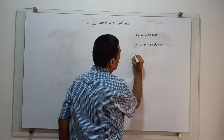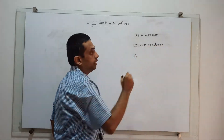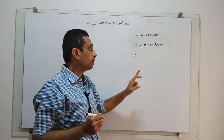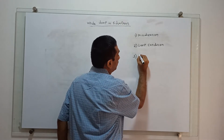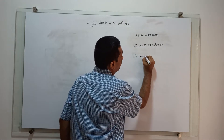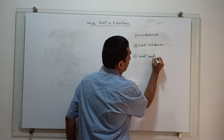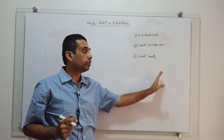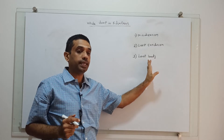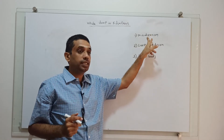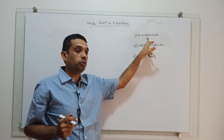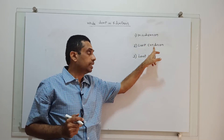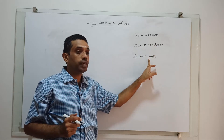The loop condition is checked: if the condition is true, then the body of the loop will get executed. If the condition is false, the control will go out of the loop and the loop body will not get executed. The initialization is done before the loop, and at the loop beginning we check the condition — if true, the body gets executed.